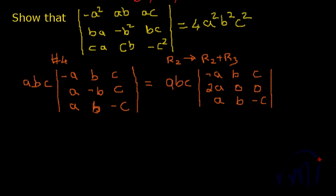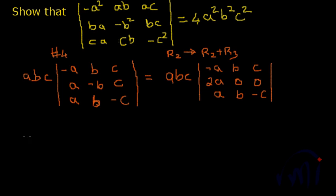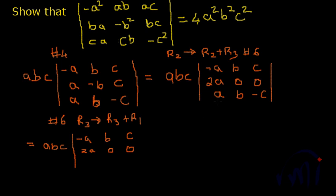So let us see if we can reduce it further and make it even more simpler. Now, again use property number 6 and say row 3 becomes row 3 plus row 1. If we do that, what do we get? A, b, c minus a, this and c. This row remains same because we are not doing anything here. Now, the last row we said becomes row 3 plus row 1. When I add minus a plus a plus a, you get a 0 here, plus b plus b you get 2b, and plus c and minus c gives you another 0.